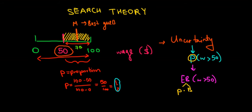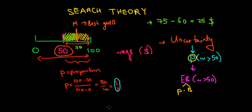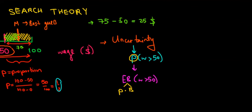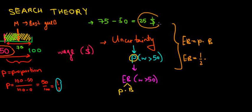The benefit of having a wage higher than fifty is: if we expect a wage of 75, then 75 minus 50 gives us an additional 25 dollars — that's our benefit, shown in this area on the graph. But that's not certain; there's only a 1/2 probability of it happening. So the expected benefit equals the probability times the benefit: (1/2) × 25 = twelve point five dollars. In expectation, accounting for probability, we might gain a benefit of twelve point five dollars.